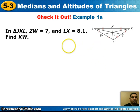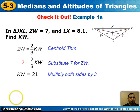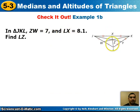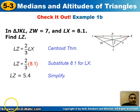I want you to try this example on your own. Pause the video and check yourself. I got that the distance from K to W is 21. Here is example 1B in triangle JKL. The distance from Z to W is 7, and the distance from L to X is 8.1. Find the distance from L to Z. I got the distance from L to Z is 5.4. If you did not get that, here are the steps to check yourself and see how to set up the problem.